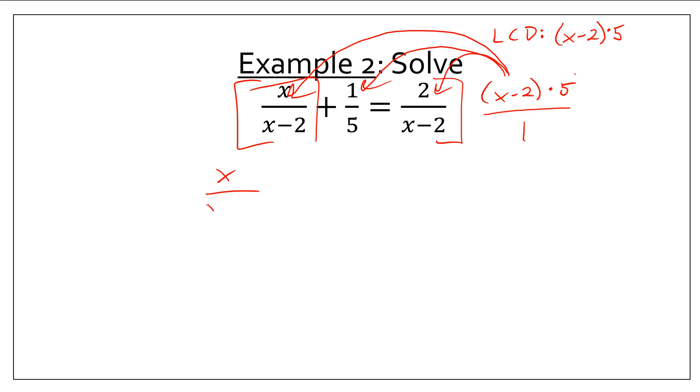So, let's look at what happens when I distribute this to the first fraction. I have x over x minus 2, but then I'm multiplying by this x minus 2 times 5. Do you see something that cancels? Well, yeah. The x minus 2s cancel and I'm left with just 5 times x. Oh, look. The denominator canceled. How convenient.